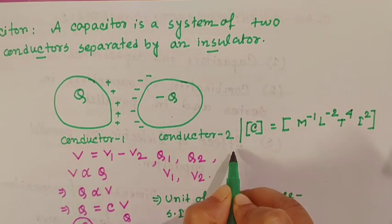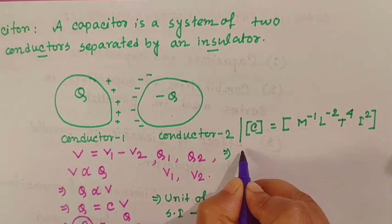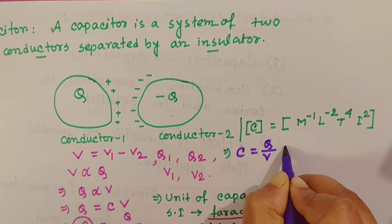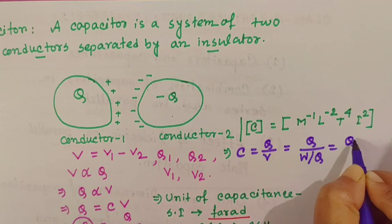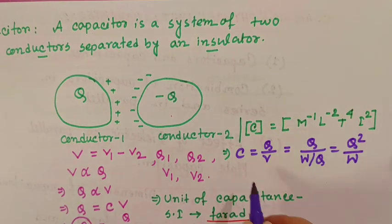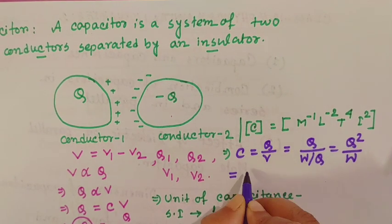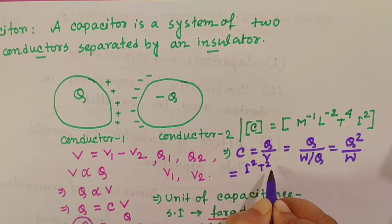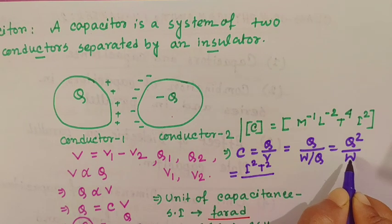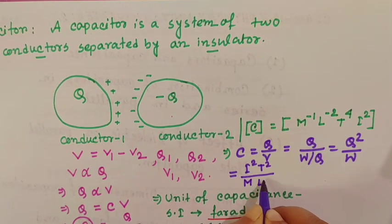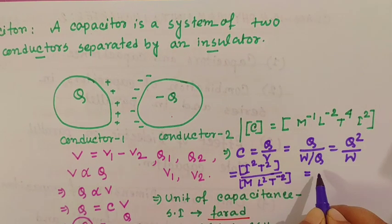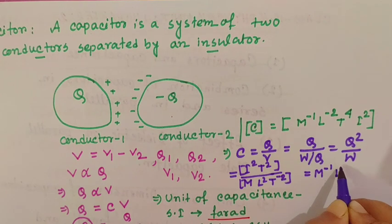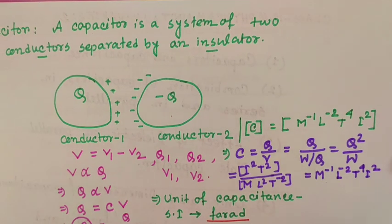How do we get this? C equals Q by V. In place of V we can write W by Q. So it becomes Q² by W. The dimension for Q is IT, so Q² gives I²T². Divided by work W which has dimension ML²T⁻². So calculating this gives M⁻¹ L⁻² T⁴ I². This is the dimension for capacitance.